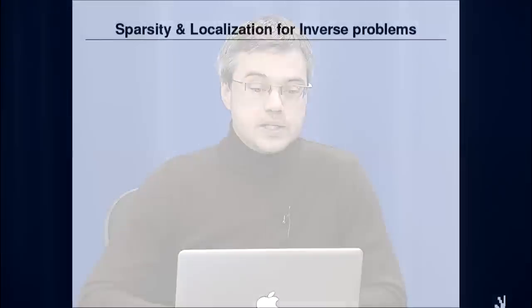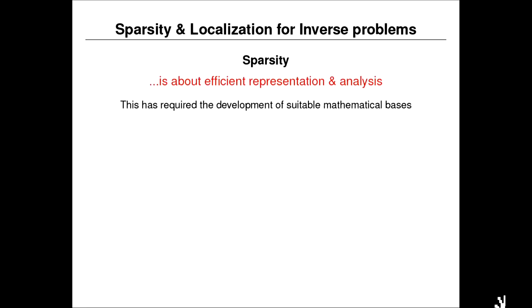The two key words in my title are sparsity and localization. Sparsity is really about efficiently representing and analyzing data and models. For us, sparsity doesn't just exist — sometimes we have to bring it out. Natural geophysical and geological data may have an innate sparsity that we need to discover by choosing or constructing an appropriate mathematical basis. Not everything is sparse in every basis, and sometimes we make dedicated bases to bring out this sparsity. This viewpoint — trying to represent and analyze data in the best basis possible — features prominently throughout my research.